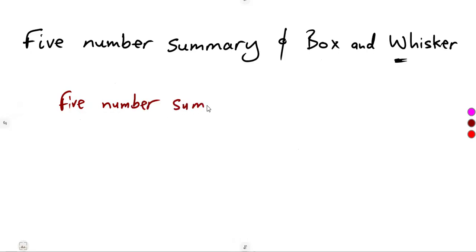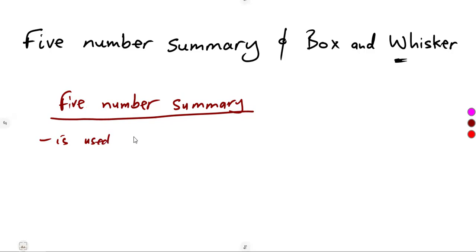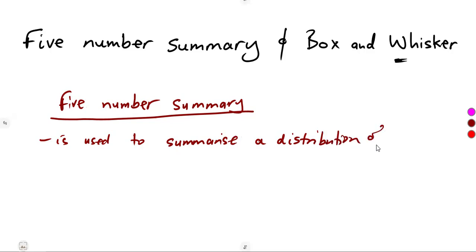The five-number summary is used basically to summarize a distribution of given data. That is the most important part you must understand — it is used to summarize a distribution of data.